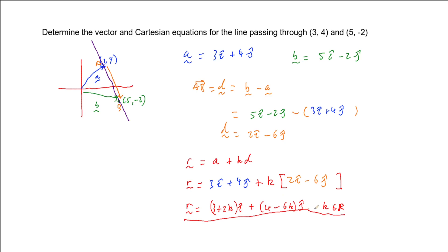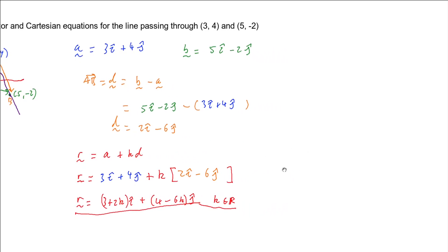So that's our vector equation. We now just need to get our Cartesian equation. To get the Cartesian equation, we're going to use the form for that, which is (x - a1)/d1 = (y - a2)/d2 = (z - a3)/d3, where a1, a2 and a3 are the three components of vector a and d1, d2 and d3 are the components of vector d. Now we won't need the z because we've only got two dimensions here.